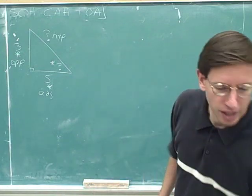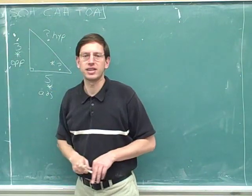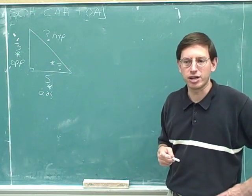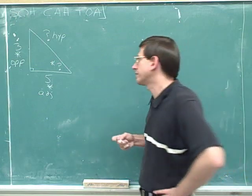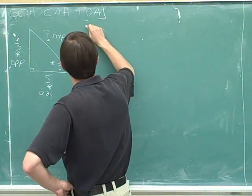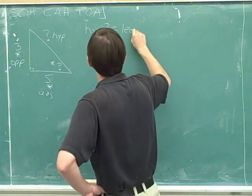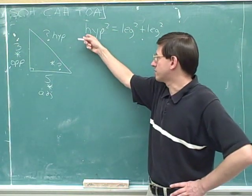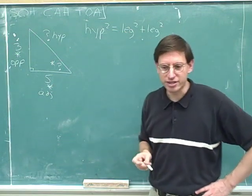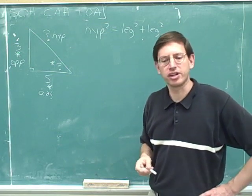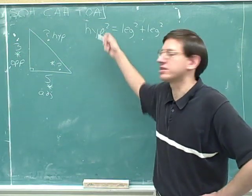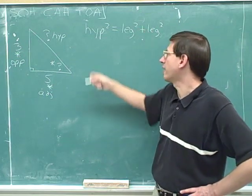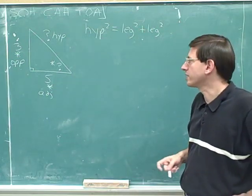We are not going to use trig functions to find the hypotenuse. Instead, we're going to use the Pythagorean theorem. The Pythagorean theorem tells us that the hypotenuse squared equals one leg squared plus the other leg squared. This is a fact in geometry — we're going to take it on faith. If you take one leg, square it, and add the other leg squared, that gives you the square of the hypotenuse.